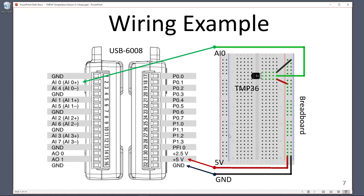Here you see a wiring diagram. We have a breadboard, the TEMP-36 sensor, and our USB-6008 DAQ device. The sensor uses only three connections. We use the 5V output on the USB-6008 wired to the power pin, ground wired to the ground on the USB-6008, and the middle pin — the analog voltage output — connected to analog input 0 on the USB-6008, which we then convert to degrees Celsius.